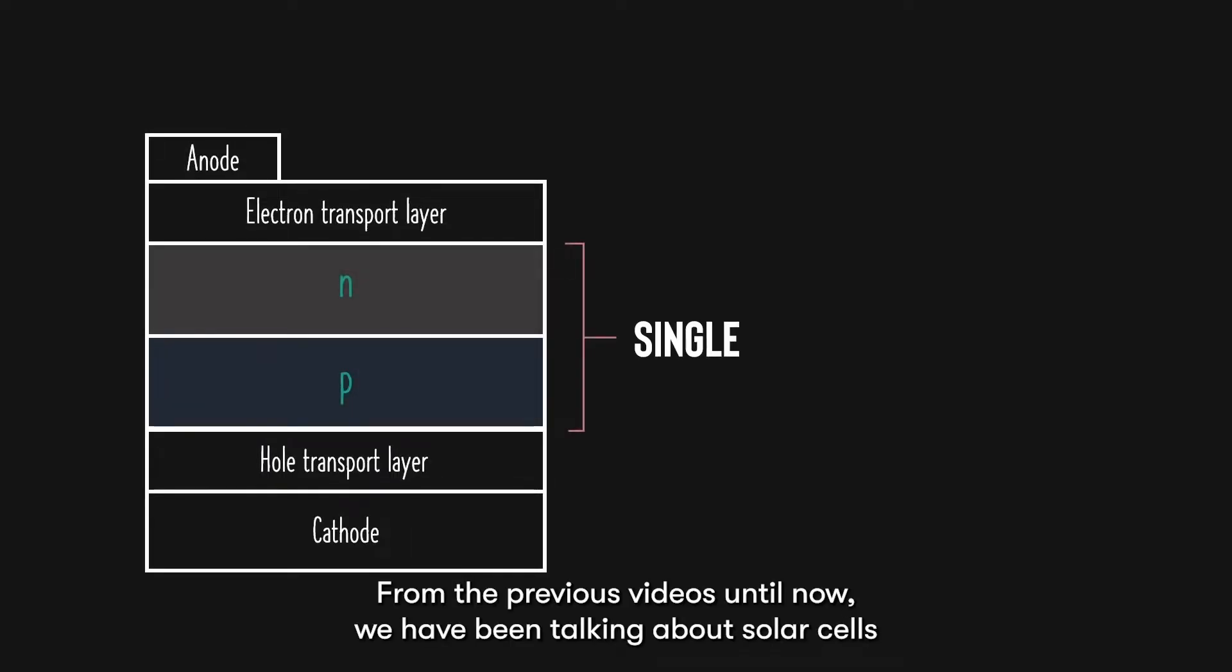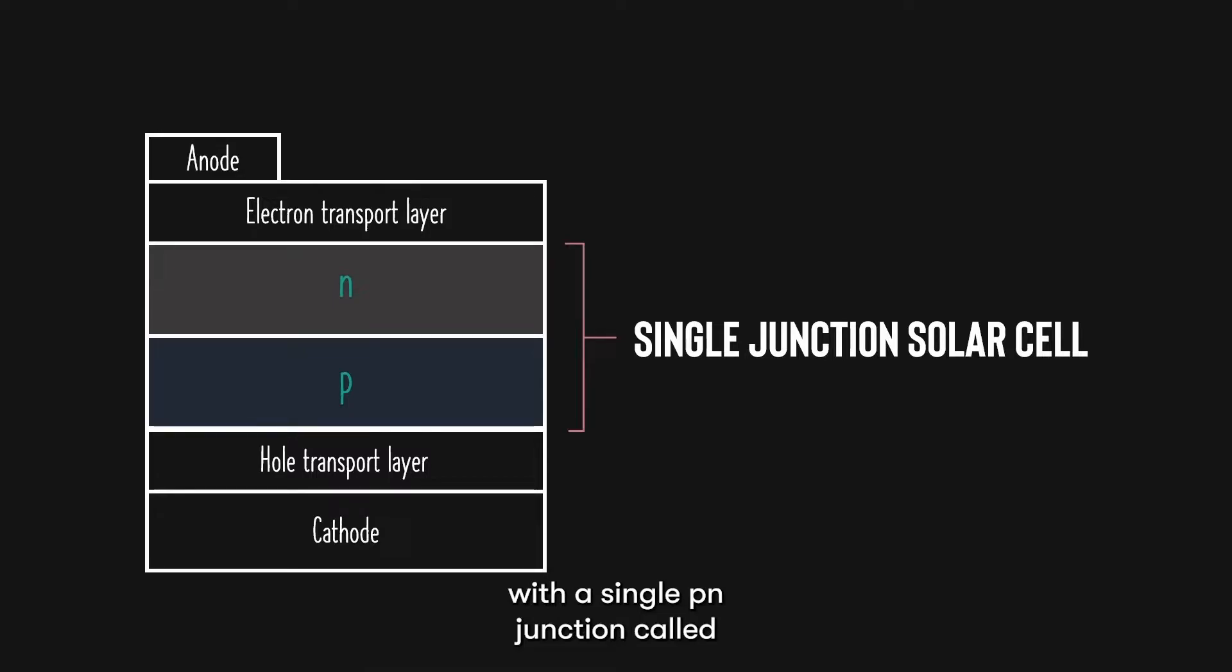Hey what is up guys, welcome back to chapter 9. From the previous videos until now, we have been talking about solar cells with a single PN junction, called single junction solar cells.